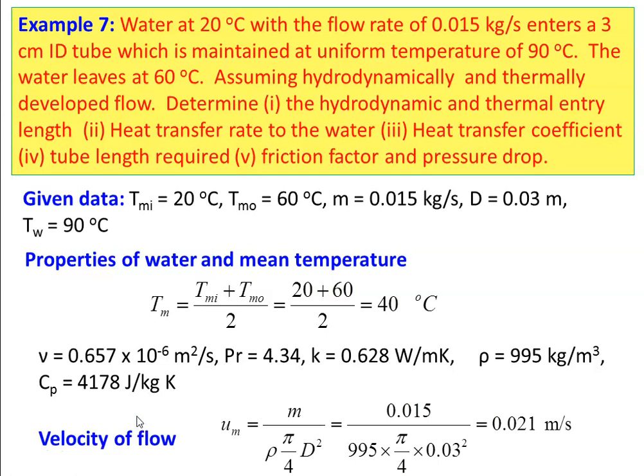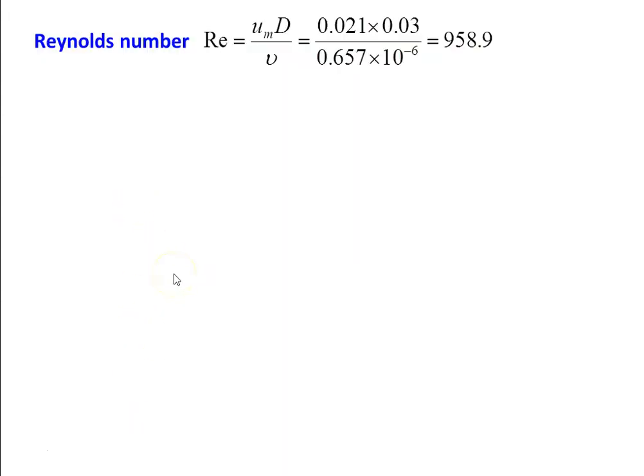The mean velocity: Um = m / (ρ × π/4 × D²) = 0.015 / (995 × π/4 × 0.03²) = 0.021 m/s. The Reynolds number: Re = Um × D / ν = 0.021 × 0.03 / (0.657 × 10⁻⁶) = 958.9. Since Re < 2300, the flow is laminar.